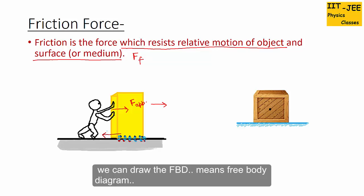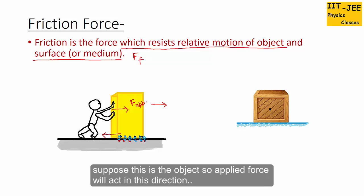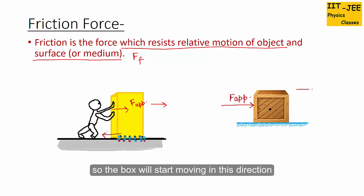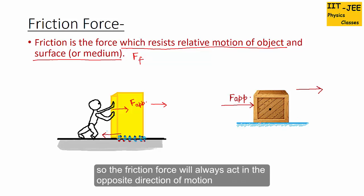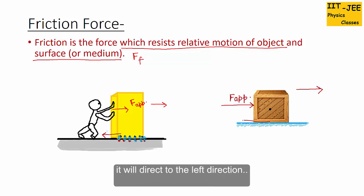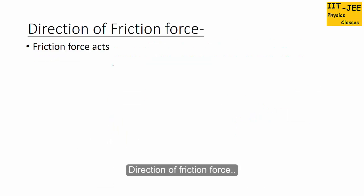We can draw the FBD — free body diagram. Suppose this is the object: the applied force is acting in one direction, so the box starts moving in that direction. Friction force will always act in the opposite direction of motion, so it will point to the left.